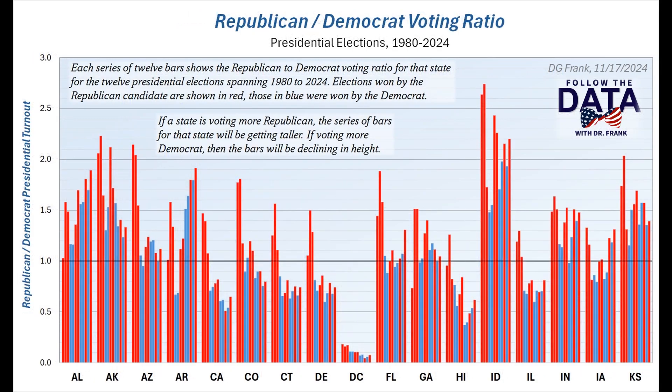Now I'm going to use the same turnout data, but I'm going to show it to you in a different way. I'm going to show you the ratio of the Republican to Democrat turnouts. This reduces the effect of population growth and emphasizes the historical trend between the parties. I've color-coded each of the bars to indicate which party won nationally — red for Republican and blue for Democrat. And since these are ratios, I can display all the states on the same vertical scale, and I've arranged them in alphabetical order.